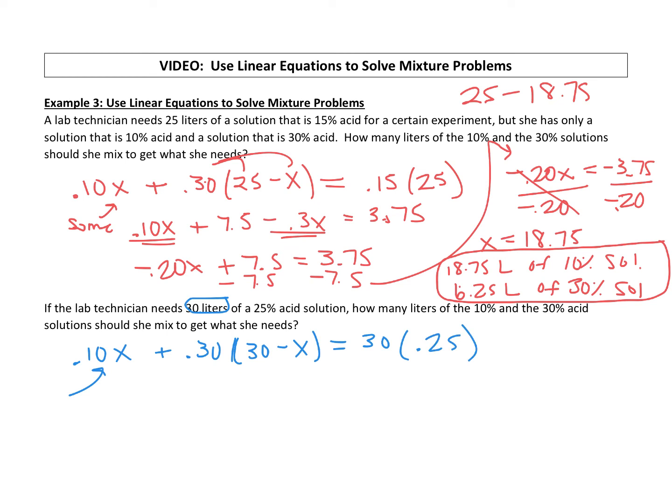Okay, let's do our distributing. 0.10x plus 0.3 times 30 is 9, 0.3 times negative x is negative 0.30x, equals 7.5 if we multiply those together.